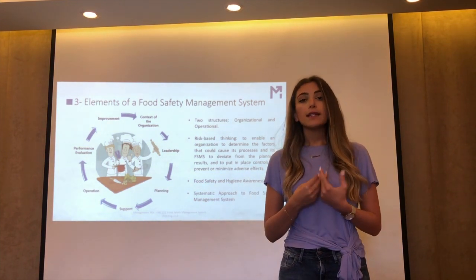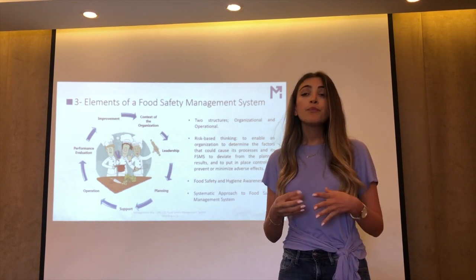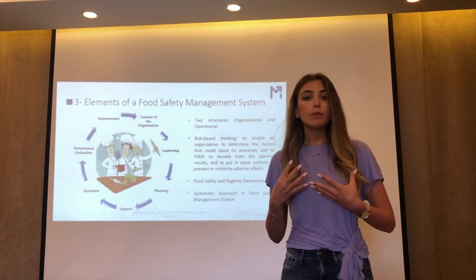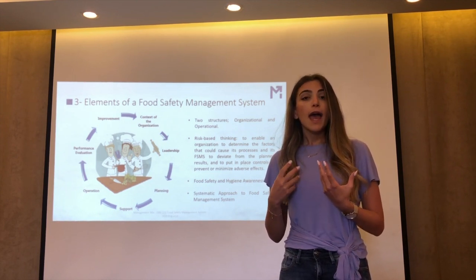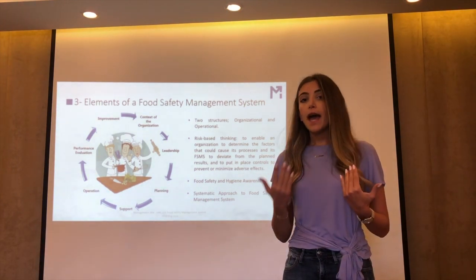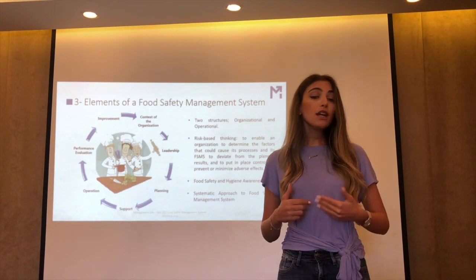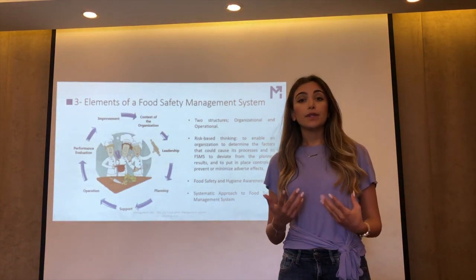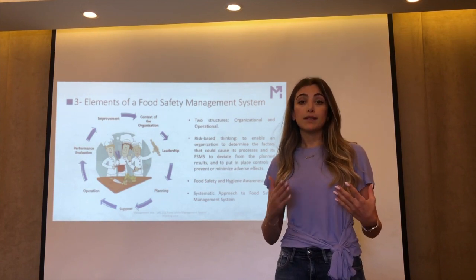When ISO 22000 is applied, the organization will develop its organizational culture so that employees become more aware of food safety hazards and become more proactive and preventive rather than reactive to any food safety incident. The standard requires that the organization sets out the processes that are essential for the smooth operation of the food safety management system.